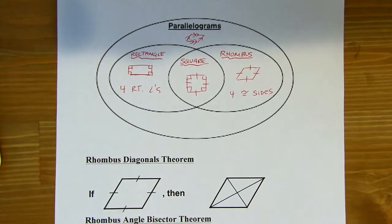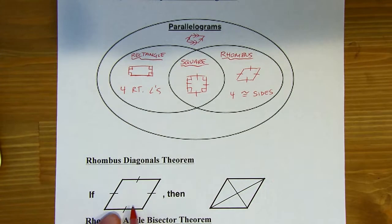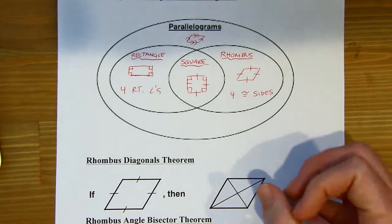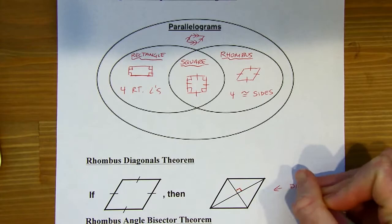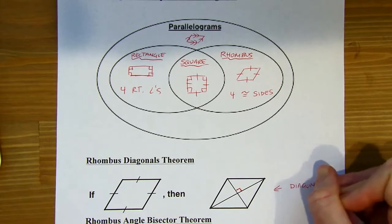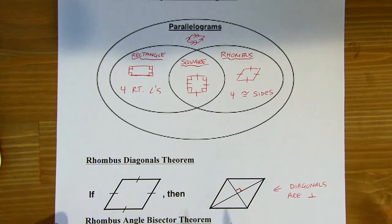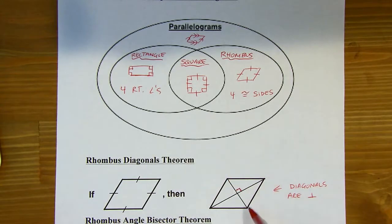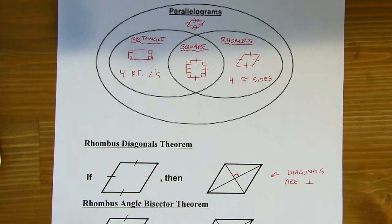We're going to look at some properties of all three of these special parallelograms. First up is the rhombus diagonals theorem. A rhombus is a four-sided figure where all four sides are congruent. Every rhombus is going to have diagonals that are perpendicular — the diagonals are perpendicular. Maybe some of you guessed they'd be congruent, but just look at this: we've got a long diagonal and a short one, so they're not going to be congruent.